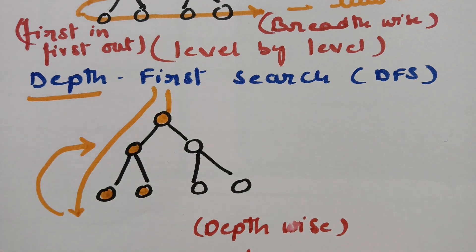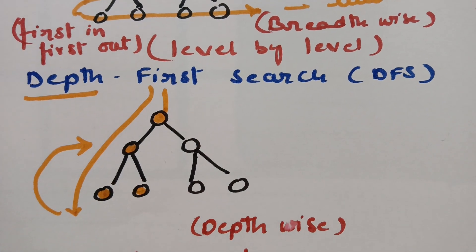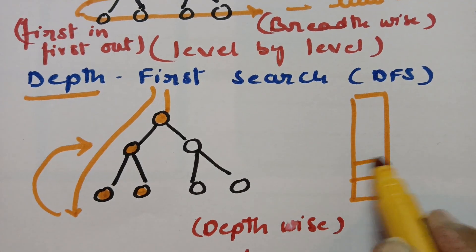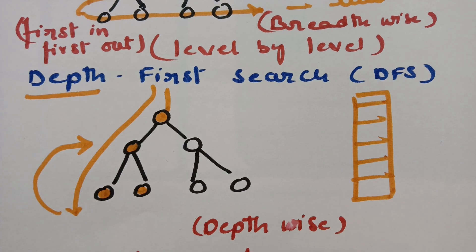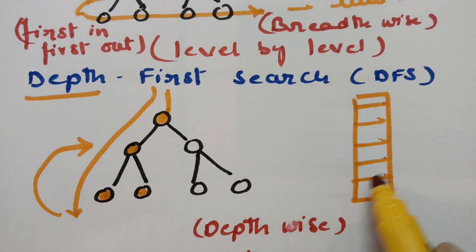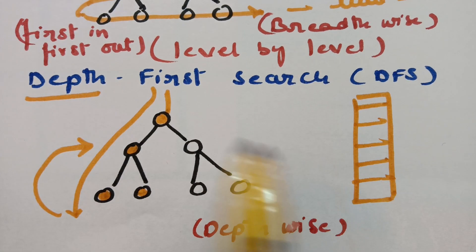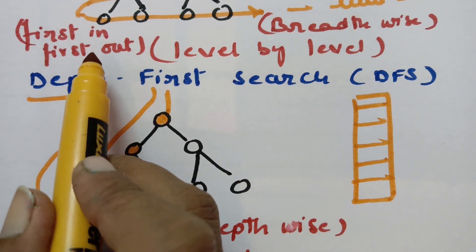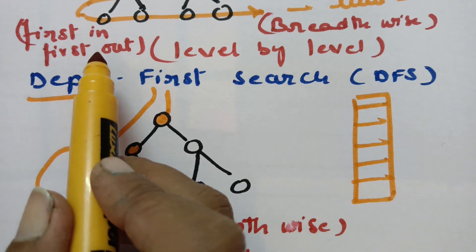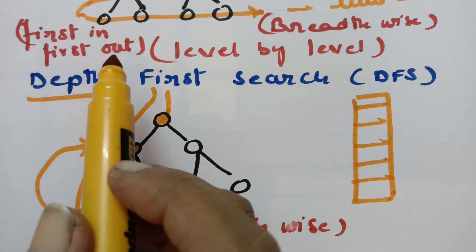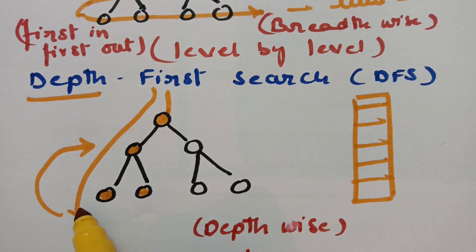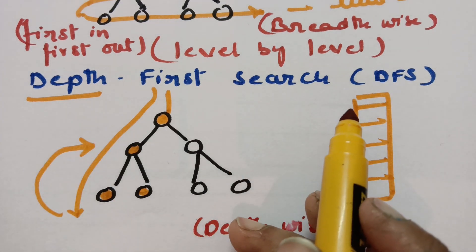So this is the main difference between breadth first search and depth first search. In DFS, we keep all visited vertices in a stack and apply last-in, first-out. In BFS, we apply first-in, first-out — whichever vertex enters the queue first, it comes out first. The one going deep into the tree is depth first search, and the level-by-level one is breadth first search.